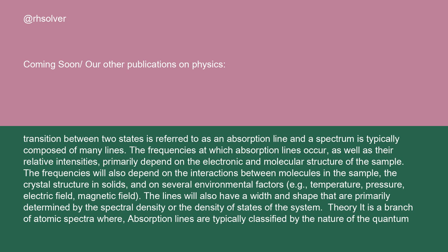The frequencies at which absorption lines occur, as well as their relative intensities, primarily depend on the electronic and molecular structure of the sample. The frequencies will also depend on the interactions between molecules in the sample, the crystal structure in solids, and on several environmental factors, e.g., temperature, pressure, electric field, and magnetic field. The lines will also have a width and shape that are primarily determined by the spectral density or the density of states of the system.